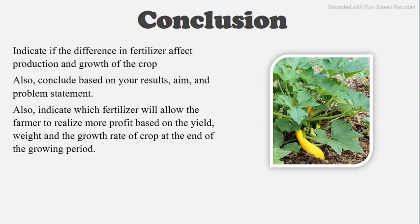For your conclusion, indicate if the difference in fertilizer affects the production and growth of the crop. Also conclude based on your result, aim, and problem statement. Indicate which fertilizer will allow the farmer to realize more profit based on the yield weight and growth rate of crops at the end of the growing period. Your conclusion does not have to be a full page, but it should summarize your results.